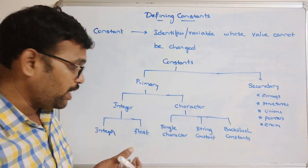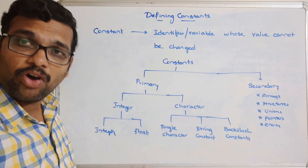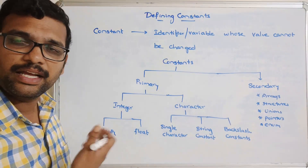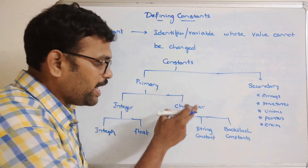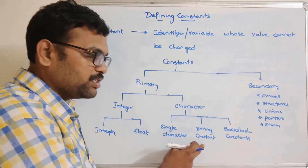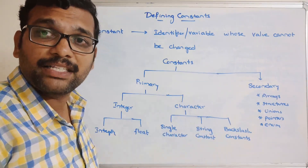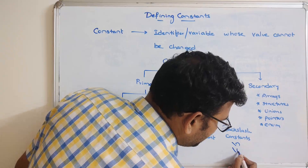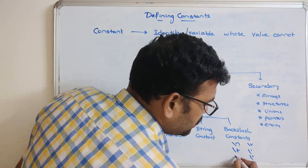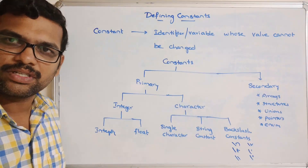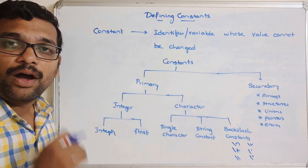There are also backslash constants. Integer constants are of integer data type. Integer constants can be further classified into hexadecimal and octal constants. Character constants include single character constants and string constants — a string being a group of characters. Backslash constants include \n, \t, \v, single quote, double quote, double backslash, and so on.